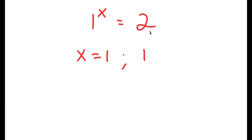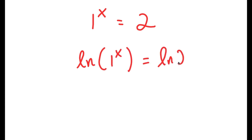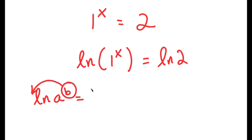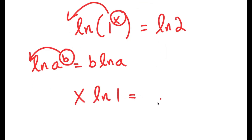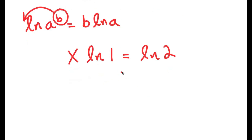Let's try solving this. I'll start by taking the natural log (ln) of both sides, giving ln of 1 to the power of x equals ln of 2. Using the logarithm property, if I have ln of a to the power of b, I can move the exponent b to the front. So I get x times ln 1 equals ln 2. You might think we could divide both sides by ln 1, giving x equals ln 2 over ln 1.